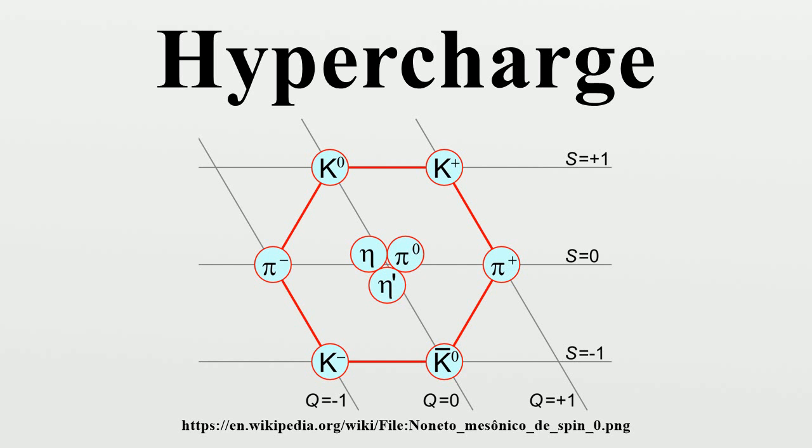This also works for quarks. For the up quark, with a charge of plus two-thirds and an I3 of plus one-half, we deduce a hypercharge of one-third, due to its baryon number.